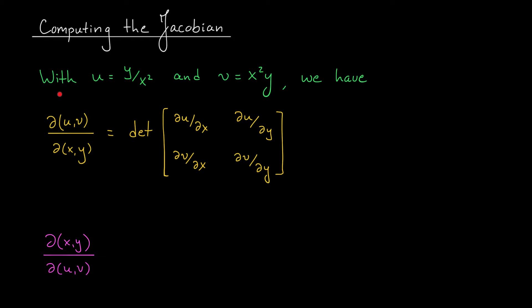This inverse Jacobian is given by the determinant of this matrix of partial derivatives. So we should start by computing these partials. Partial u over partial x is going to be minus 2y over x cubed. Partial v by partial x will be 2xy. Partial u by partial y is going to be 1 over x squared. And partial v by partial y is x squared.